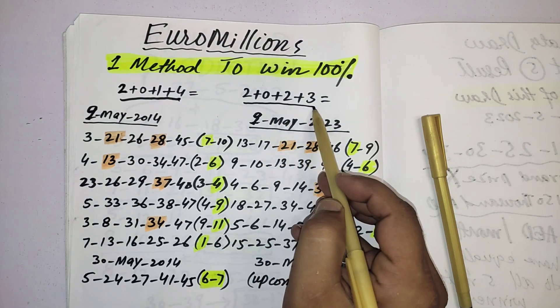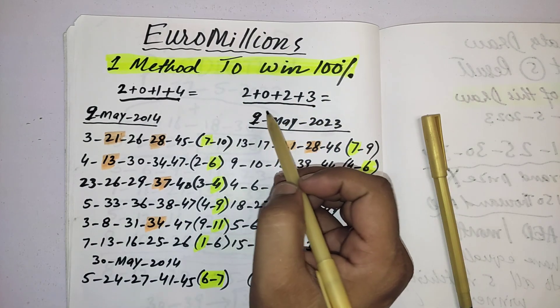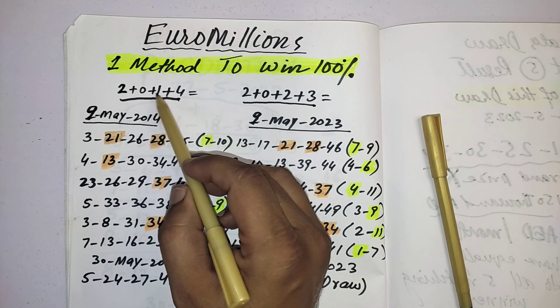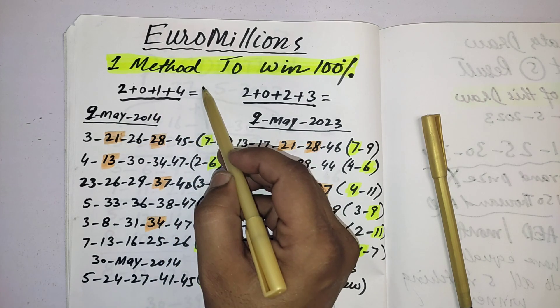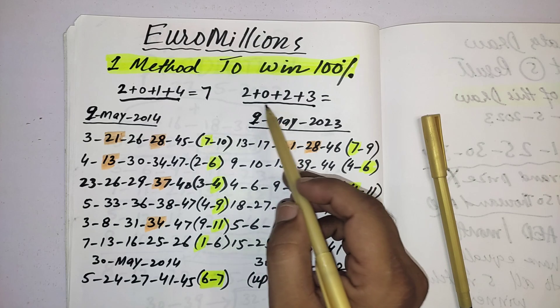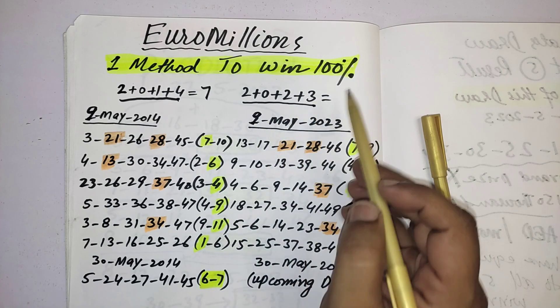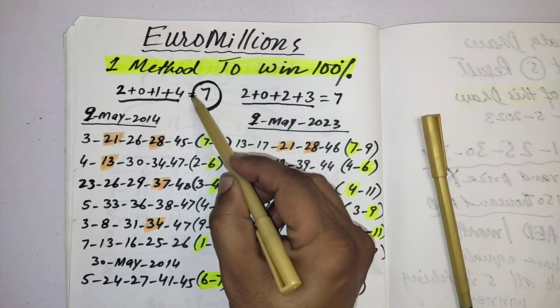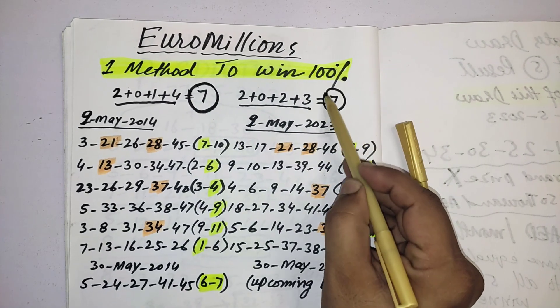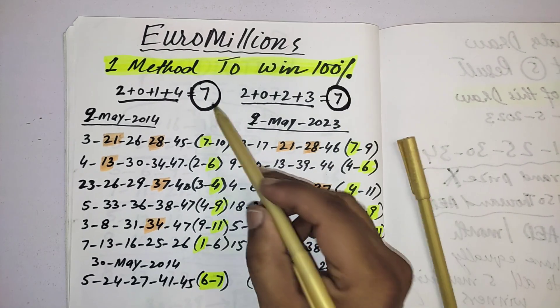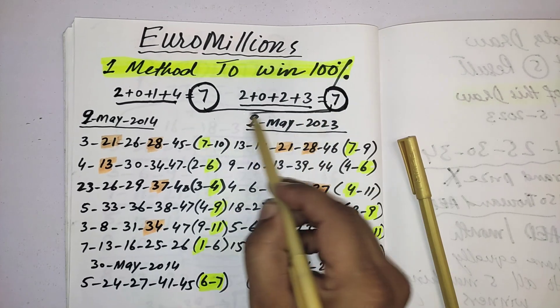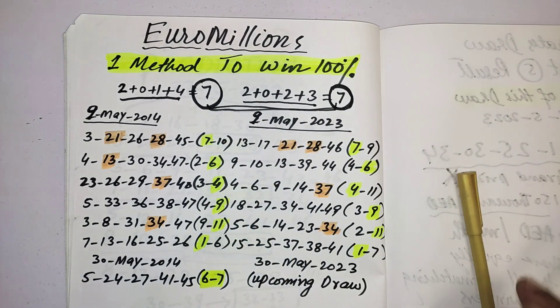Here you can see this is 2014 and this is 2023. What is the same thing? The same thing is the sum. If we add these numbers 2+1+0+1+4=7, here is also you can see 2+0+2+2+4+3=7. The same history in these two years, the total sum is 7. According to this attraction I will show how they are picking the lucky star numbers and the main draw numbers.